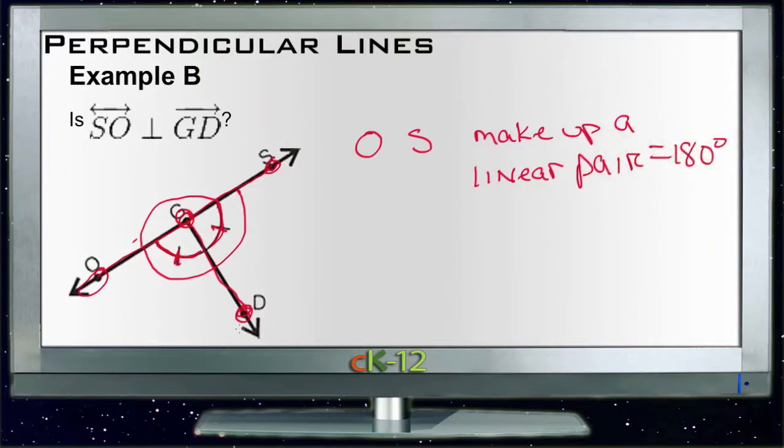So if GD bisects 180 degrees, then between OGD and SGD we're looking at 90 degrees on each side. So are they perpendicular? Yes, absolutely, because they meet at 90 degree angles right here.